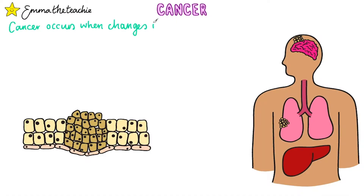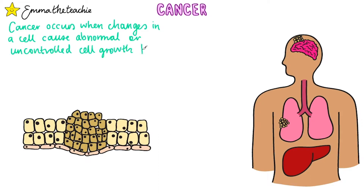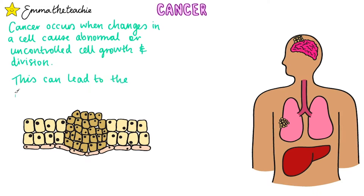Cancer occurs when changes in a cell cause abnormal or uncontrolled cell growth and division. This can lead to the formation of tumours in the body, like the one you see here.